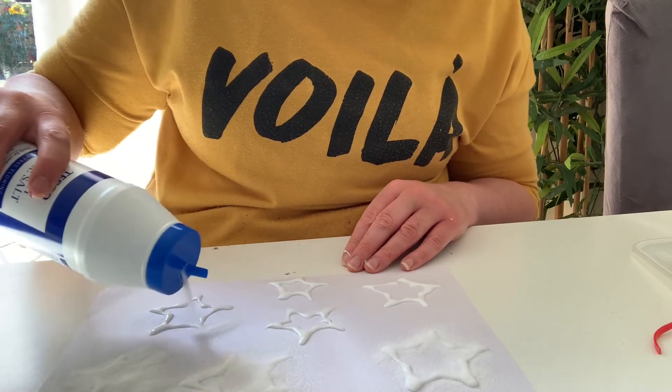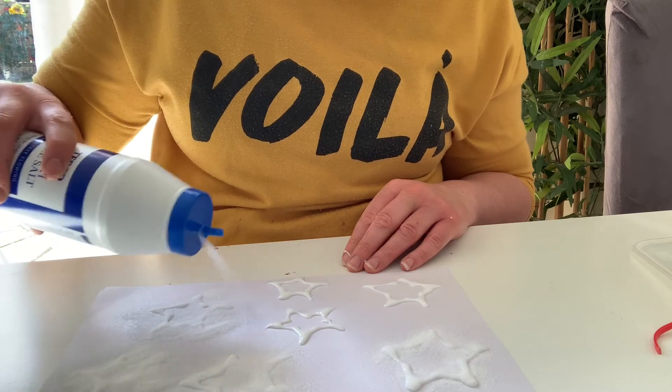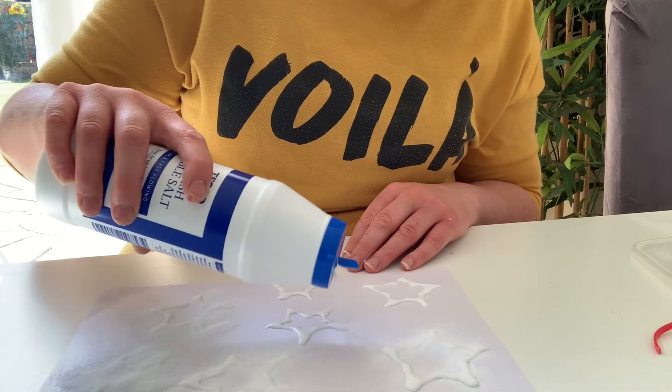If you make sure you've got a piece of paper underneath it just means that when you shake off all the extra bits of salt that you don't need it can collect it all up and that means it doesn't go everywhere as well.